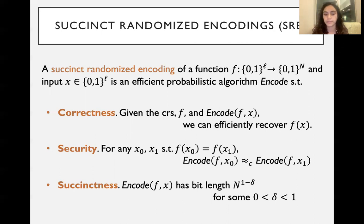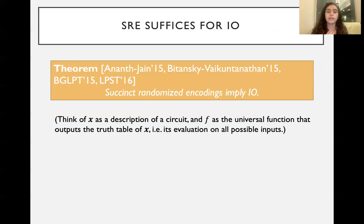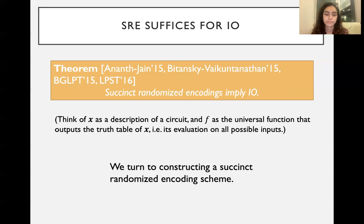I'm ignoring here factors that are polynomial in the security parameter or L, since they're not that important. We already know that SRE, as defined before, suffices for IO. This is from work from a couple of years ago. I'm not going to get into it, but basically you can think about the input x as being the description of a circuit and f being the universal function. So f is basically just going to compute the truth table of x - evaluate circuit x on all possible inputs. We'll now turn to actually constructing such an SRE scheme.